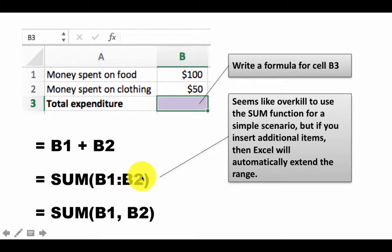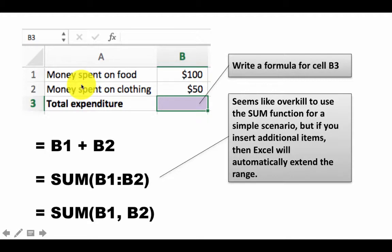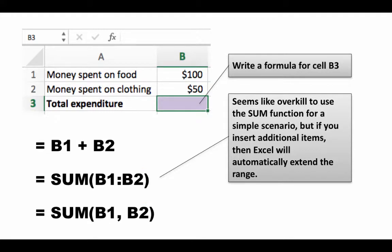Writing B1+B2 is fine, but writing SUM(B1:B2) has a small advantage. When you have a range like this, suppose you've got money spent on food, money spent on clothing, and total expenditure, and for some reason you need to insert something between these two — or just above or just below. The beauty of using a range is that the moment you add one more item, Excel automatically changes the formula for you, updating it to SUM(B1:B3) automatically.